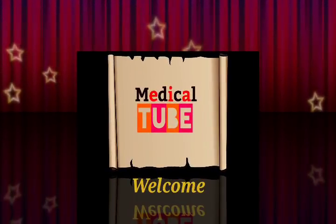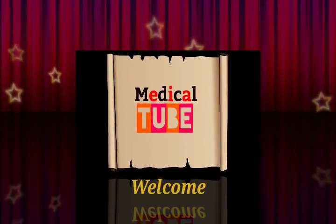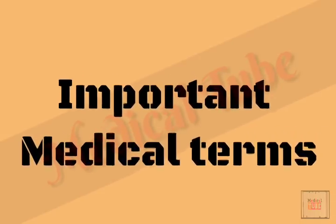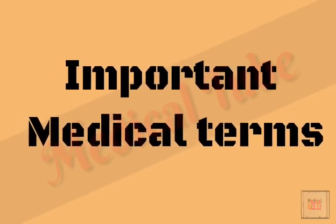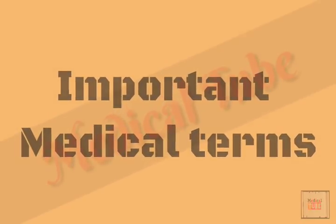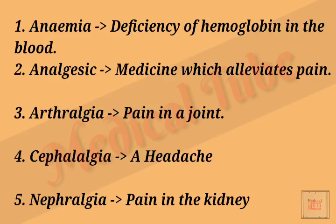Hello friends, welcome to Medical Tube. Today I discuss very important medical terms. Number one: anemia means deficiency of hemoglobin in the blood. Number two: analgesic means medicine which alleviates pain.